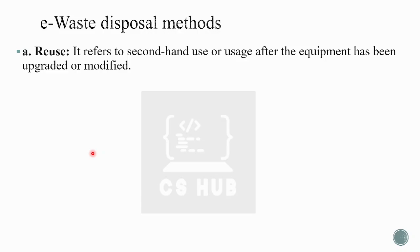What are the e-waste disposal methods? The first method is reuse. If you are still using a mobile or laptop, you can continue using it. Alternatively, you can give it for second-hand use — someone else can use the device. Refurbishing and modifying the equipment for continued use also helps reduce e-waste generation.